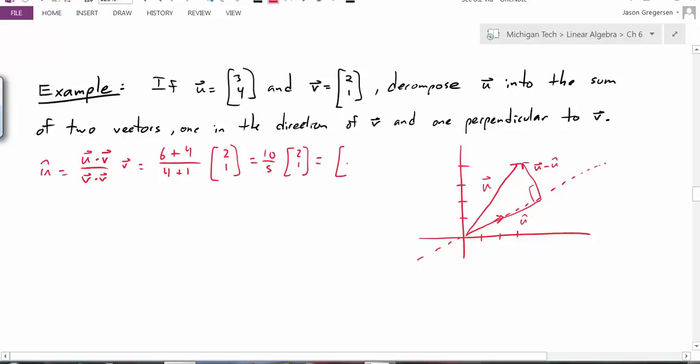10 divided by 5 is 2, and I'm left with the vector 4, 2. Now if we just look over at a picture, maybe sketch a quick 4, 2, that does look like it fits our projection vector. So that makes sense graphically as a solution.